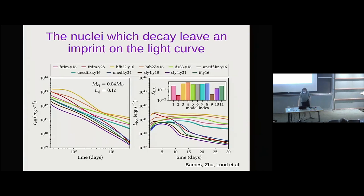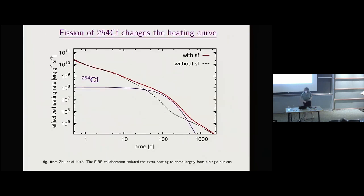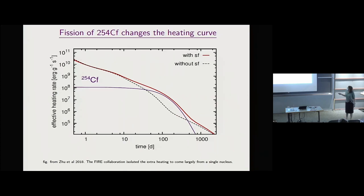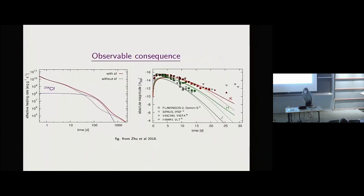So the actual nuclei and nuclear decays matter. Here's an example of one that is particularly critical: Californium-254, which is really heavy — mass number 254 compared to lanthanides around mass number 160. If you look at the heating without Californium-254, you get the dotted line. But if you include Californium-254, you get the red line — it's a pretty significant perturbation on the heating, which becomes a lifting of your luminosity at late time.